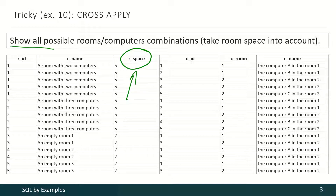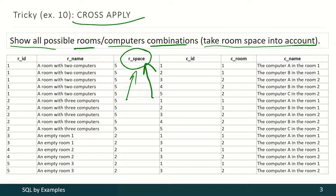We have to show all possible rooms-computers combinations, and we have to take room space into account, and the room space is stored in this field. To solve this task we shall use the cross-apply operator. In this expected result it is clearly visible, for instance for this room that has only place for two computers, that there are two computers here, not three, not four, not five, but only two.